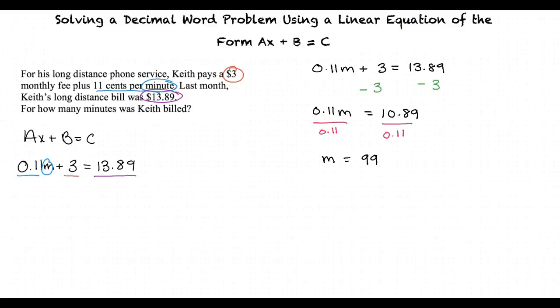This means that Keith must have been billed for 99 minutes last month in order for his bill to be $13.89.